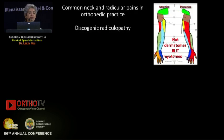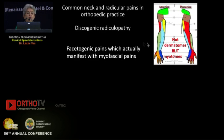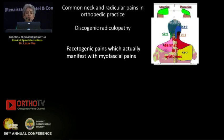The common neck and radicular pains in orthopedic practice include discogenic radiculopathy. If you look at it, these indicate not dermatomes but actually myotomes in practice. Facetogenic pains, which actually manifest as myofascial pains — demarcated as C3, 4, 5, 6, etc. — actually represent the muscles which underlie these areas.